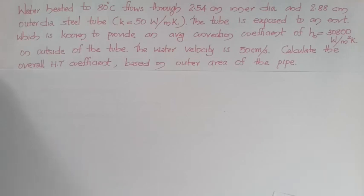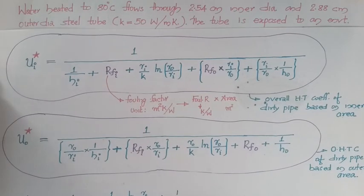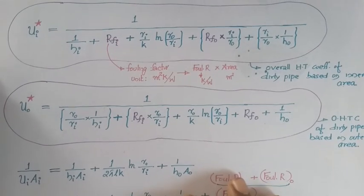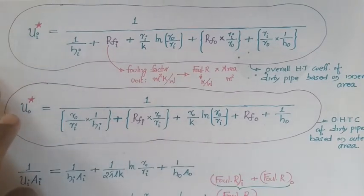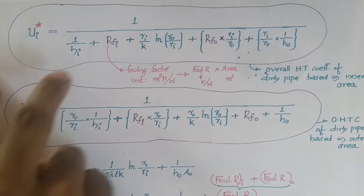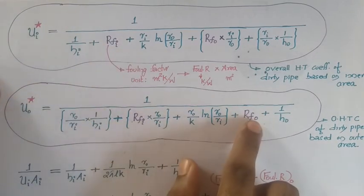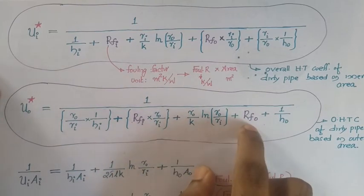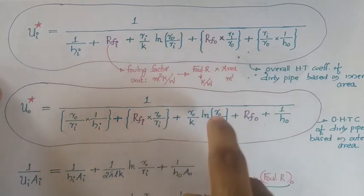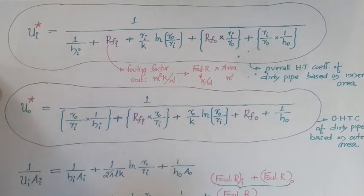In this video we will be solving a problem based on overall heat transfer coefficient from heat exchangers. In the last video we derived the expression for overall heat transfer coefficient — one based on inner radius and one based on outer radius — where we are considering the effect of fouling factor. If fouling is not considered, then the RFI and RFO values become zero. This expression can also be found in the data book.